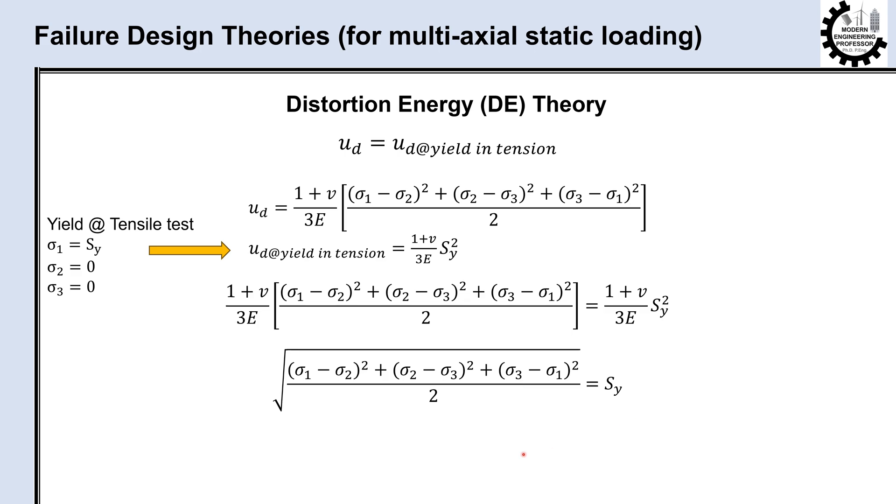It's common to consider the left-hand side of this equation as an equivalent stress representative of the entire general state of stress. It is called von Mises stress. The yielding failure can be formulated as sigma prime equals Sy. Therefore, the safety factor based on the distortion energy theory is defined as Sy over sigma prime.